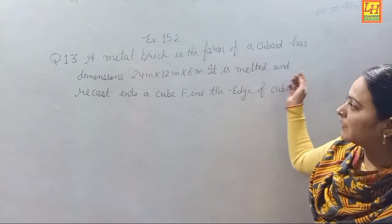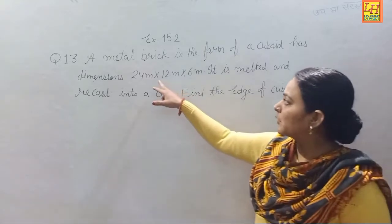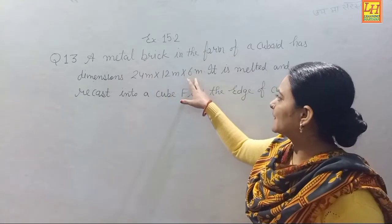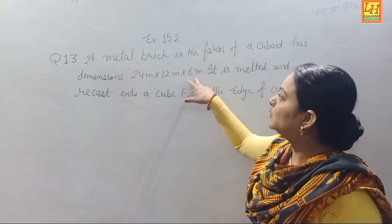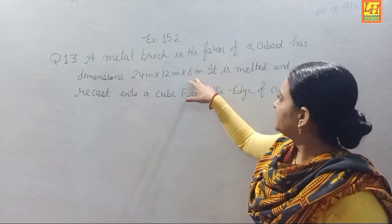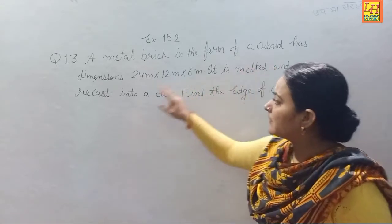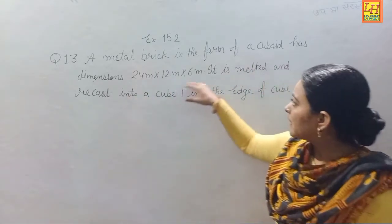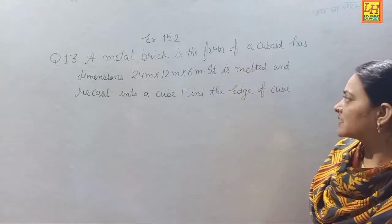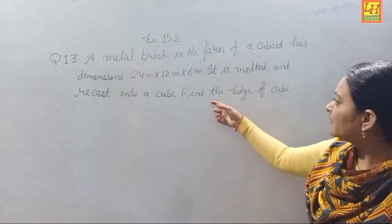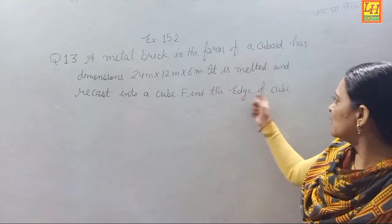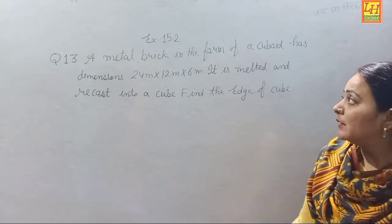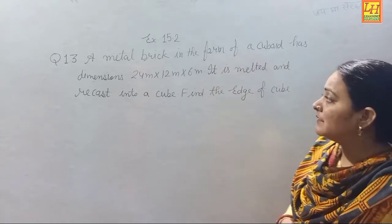Now Question Number 13: A metal brick in the form of a cuboid has dimensions 24 meter × 12 meter × 6 meter. It is melted and recast into a cube. Find the side of the cube.